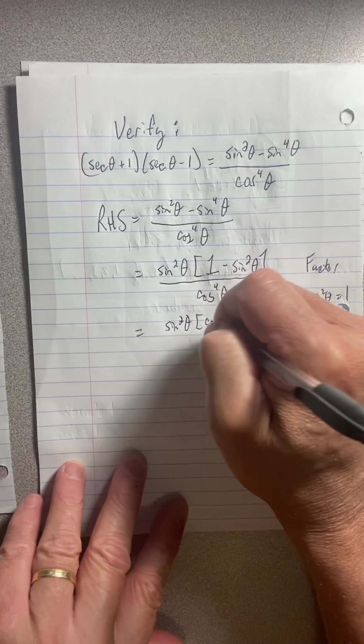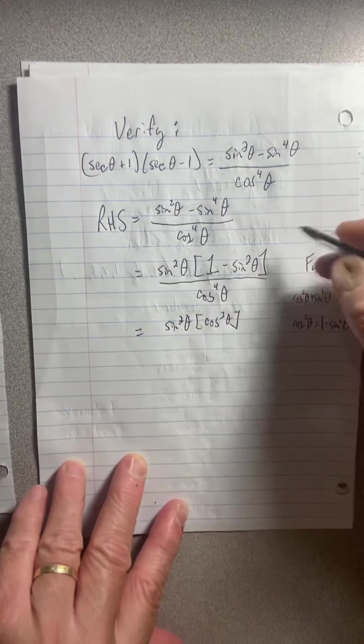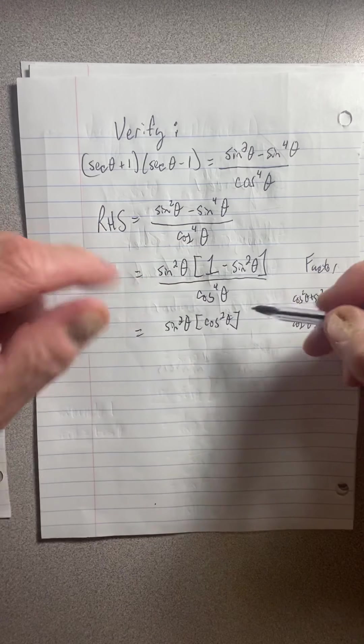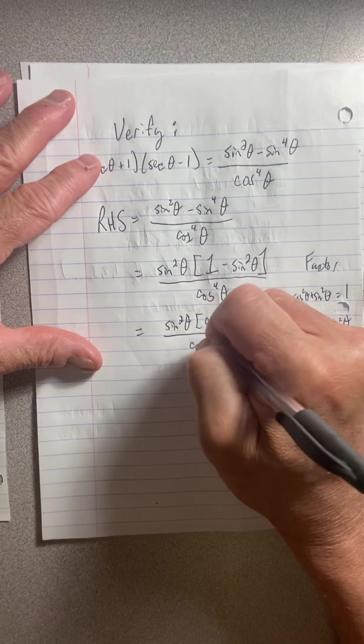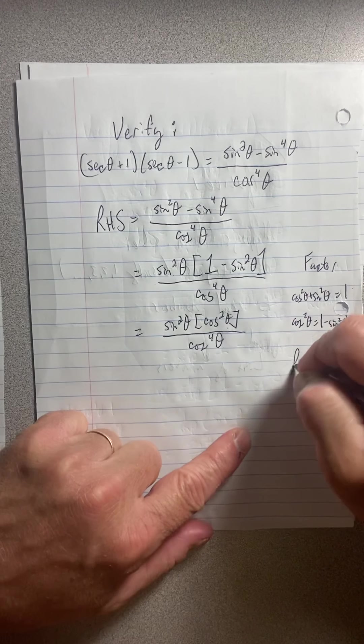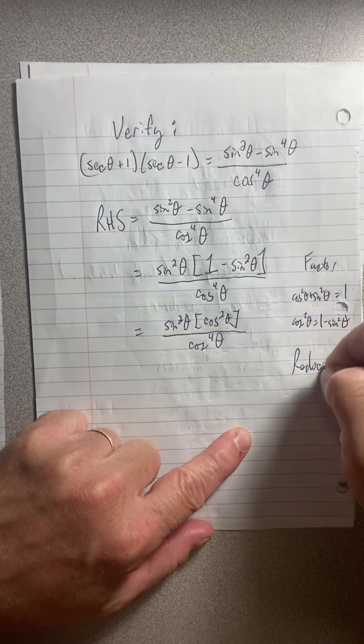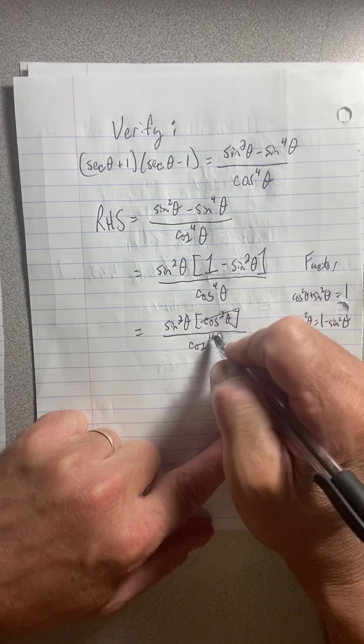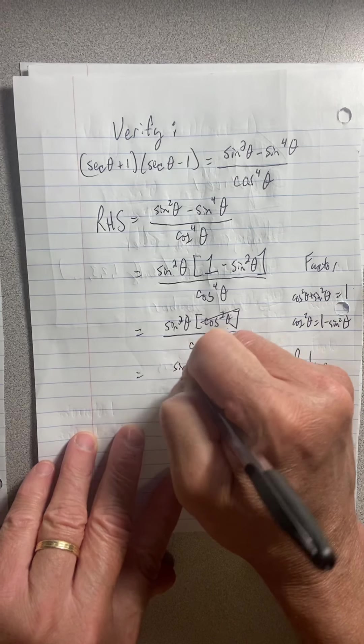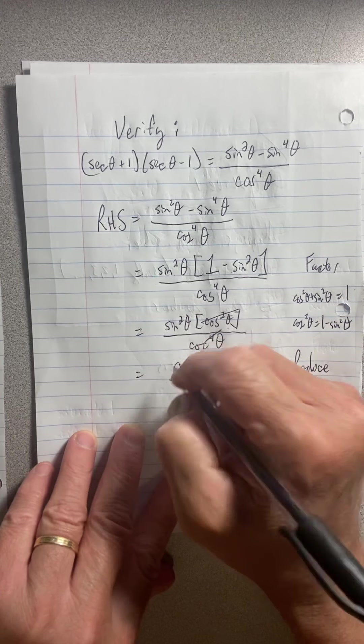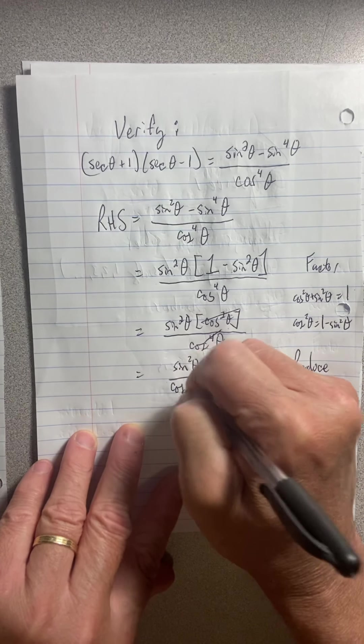So in the bracket I have cosine squared theta. They are one in the same thing so I can substitute. I haven't changed the value of this side at all. Now I'm going to reduce because I have a common factor. This cosine squared is going to reduce with the cosine squared down there and that's going to leave me sine squared theta over cosine squared theta.